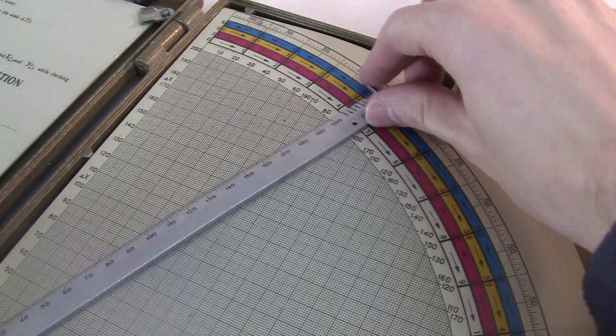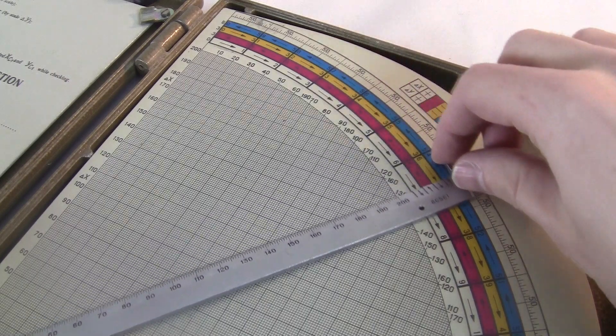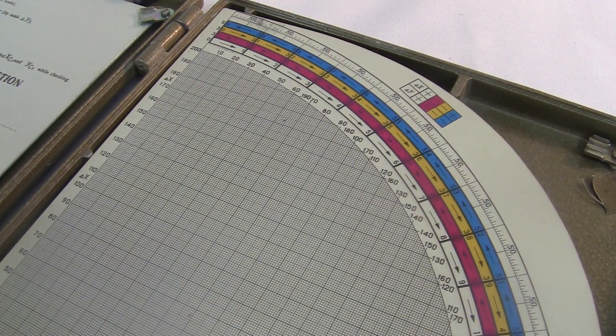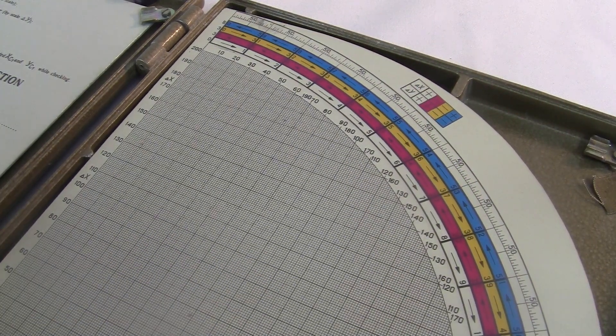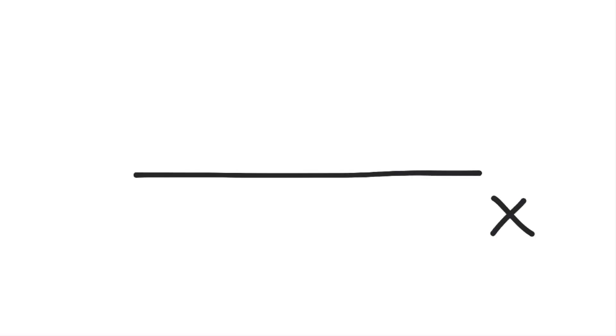First of all, this is not just a Soviet thing, but surveyors measure directions of everything relative to north. So, mathematicians usually would draw diagrams in the plane like this. The x-axis is horizontal, the y-axis is vertical, and the angle is measured counterclockwise starting from the x-axis on the right.